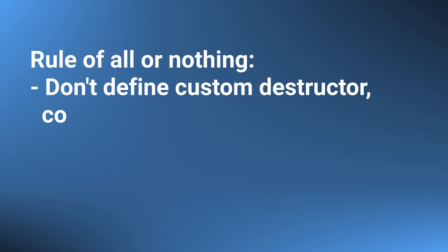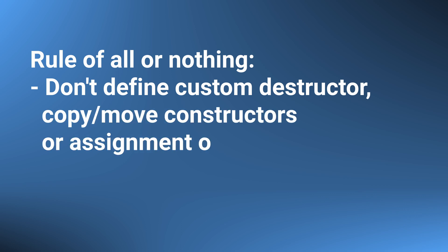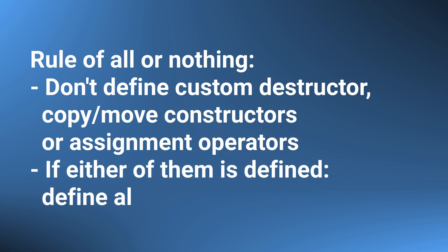That being said, I want to stress that we nearly never manage our resources manually. And if we don't manage them manually, there is no reason to implement any of these special functions. So instead of the rule of five, I prefer talking about the rule of all or nothing: don't define a custom destructor, copy or move constructor, or copy or move assignment operators — unless just one of them needs to be defined, in which case explicitly define all the rest. This is a simple rule to follow, and I hope you now understand why it is needed.